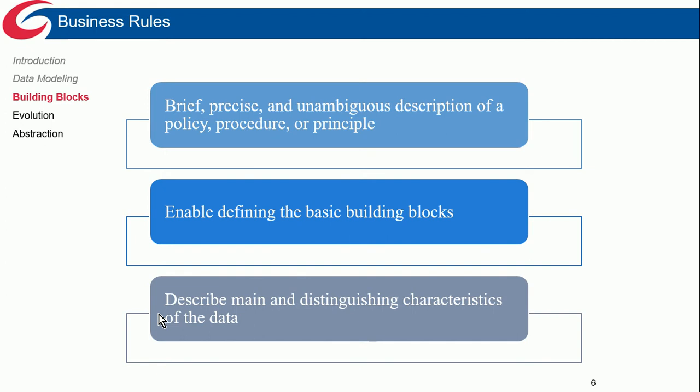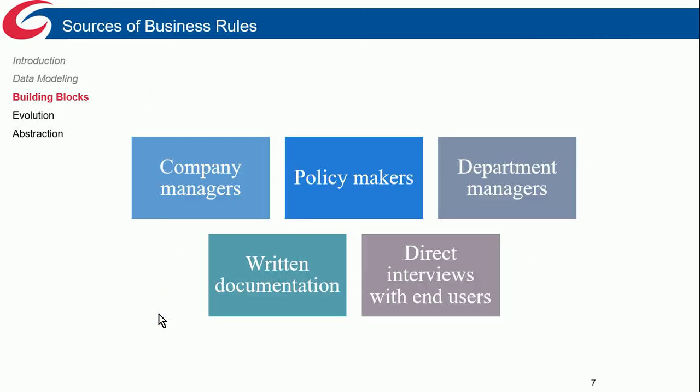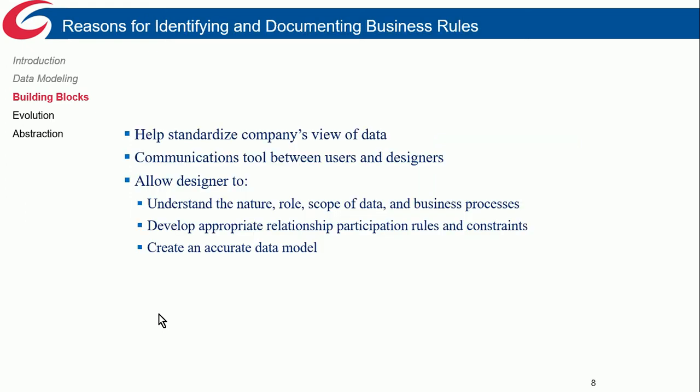Every database design must start with gathering business rules. Where do we get them? We can talk to company managers, policymakers, department heads, look at written documentation like forms and reports, review standard operating procedures, and talk with end users. It's important not to forget end users — a lot of tacit knowledge about how things work lies with them, and sometimes management isn't even aware of it. So we must talk to all levels and gather as much information as possible.